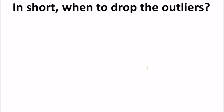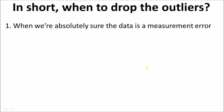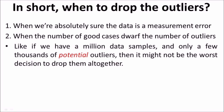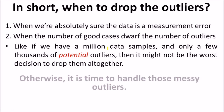When should we drop the outliers? First, when we are absolutely sure the data point is a measurement error and we have no way to track those people down. Second, when the number of good cases far outweighs the number of outliers. For example, if we have a million data samples and only a few thousand potential outliers, it might not be the worst decision to drop them altogether.